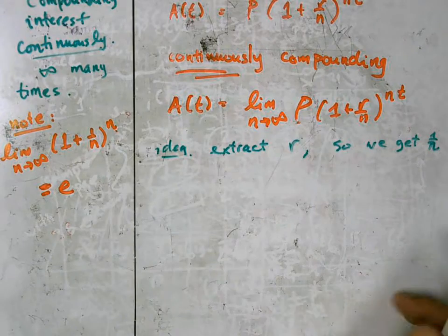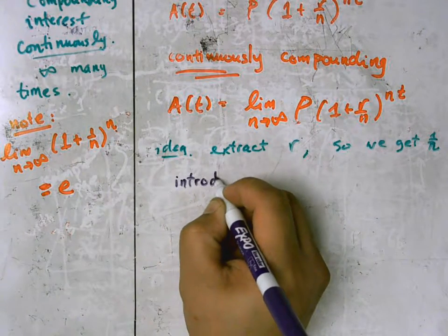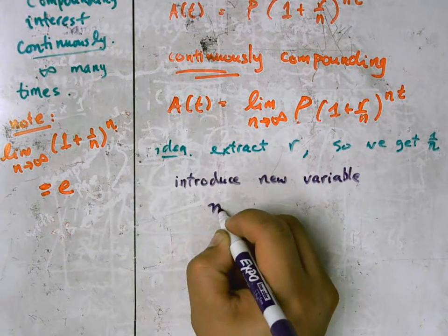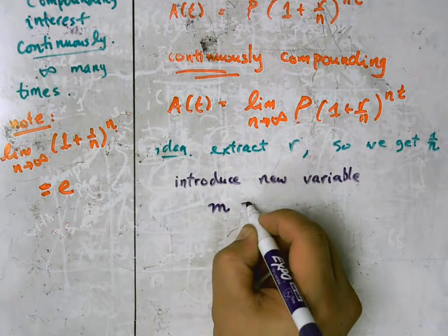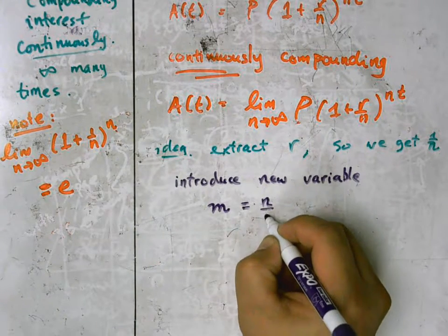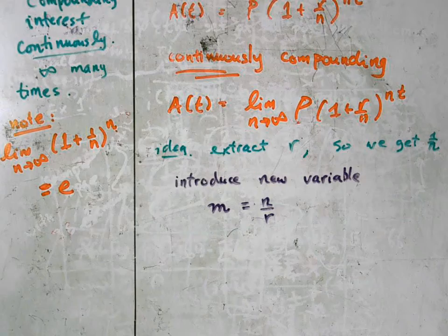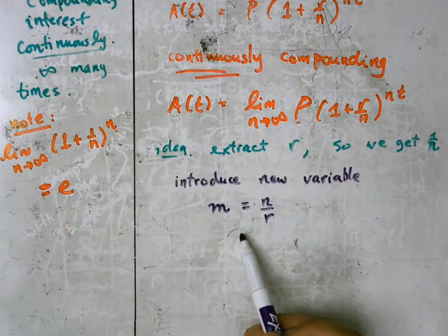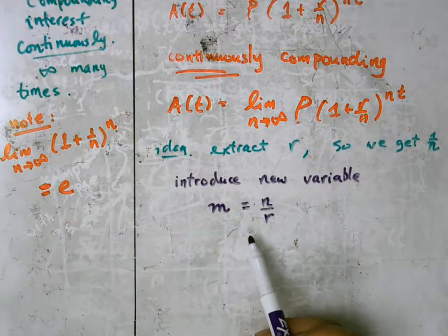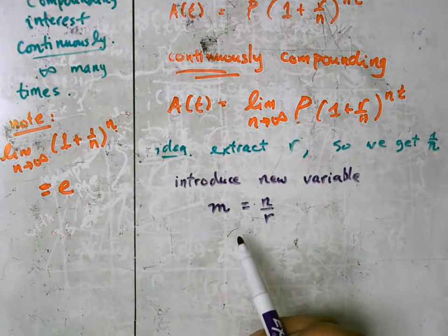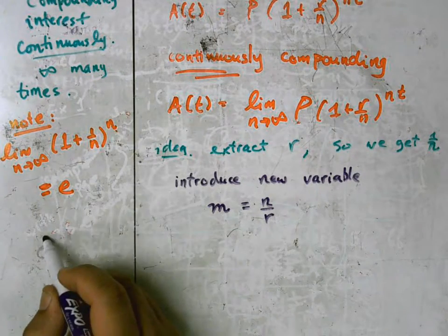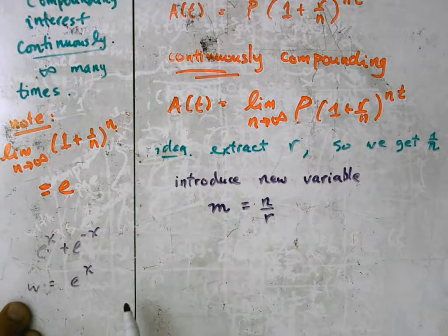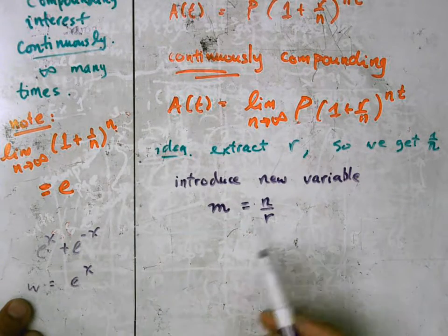So we're going to introduce a new variable m, and we're going to say that m is equal to n over r. And if you're kind of taken back by this idea of introducing new variables, we've done this before. Whenever we have a problem that looks like a quadratic but isn't quite a quadratic, we made that substitution before. We've done this with e to the x plus e to the negative x. So that's all we're doing here.